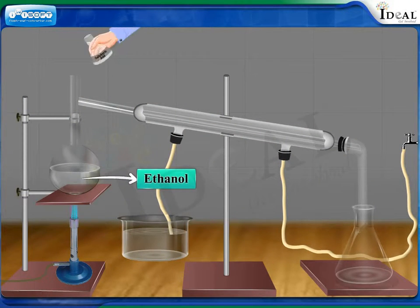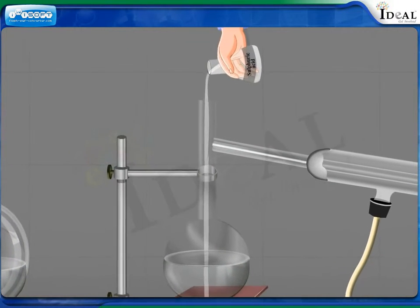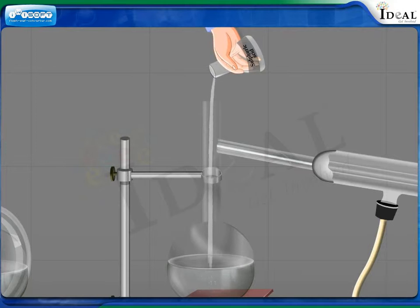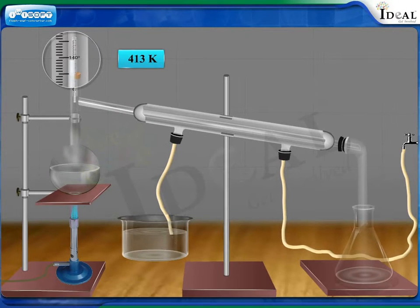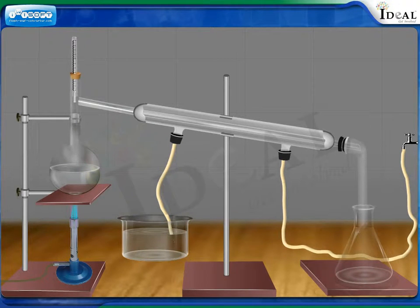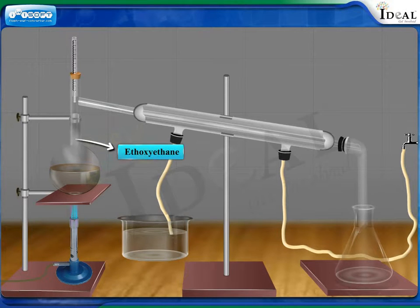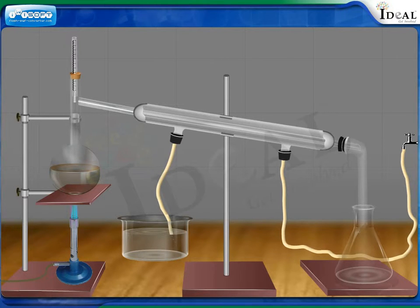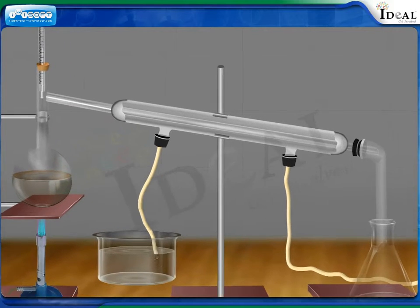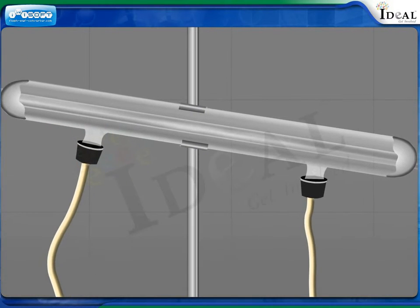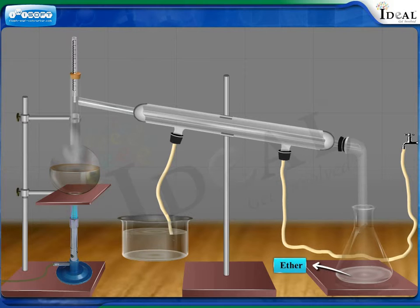Moles of ethanol and concentrated sulfuric acid are reacted at 413 Kelvin temperature. As a result, the obtained product ethoxyethane is in vapor form at the temperature of reaction due to its lower boiling point of 318 Kelvin. This vapor, when cooled by passing through a water condenser, gives liquid ether.